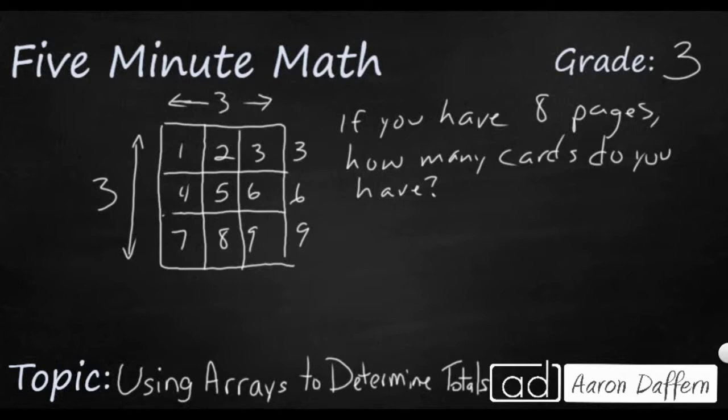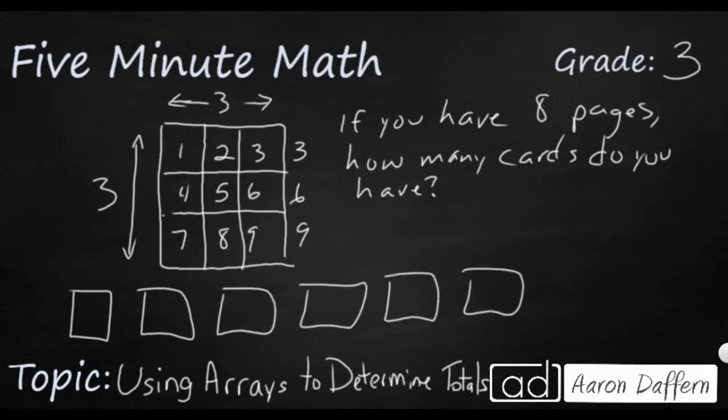If you want, you can just use a multiplication fact you might know. But let's go ahead and draw out eight pages. We could draw out this little array for each of these, but we already figured out that each array has nine. So let's just put nine for each of these.